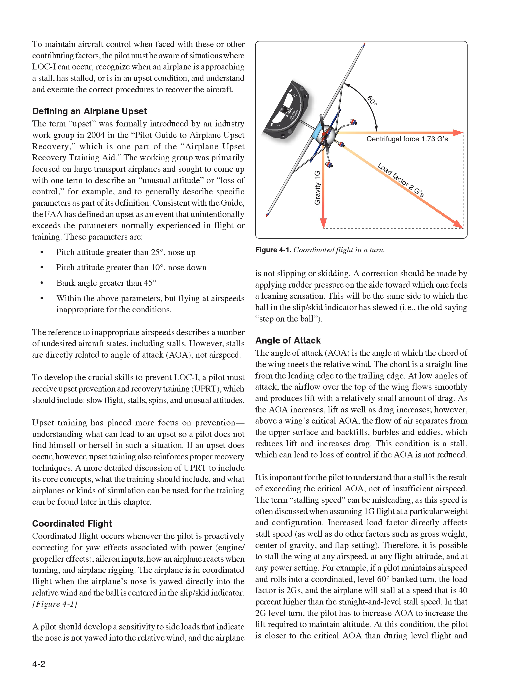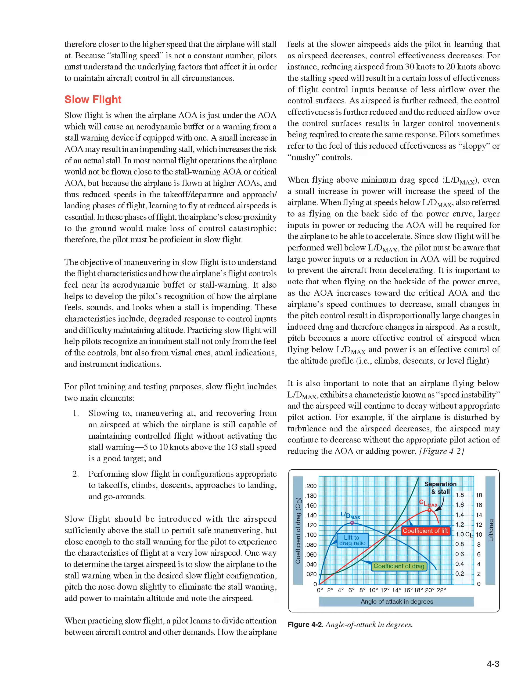For example, if a pilot maintains airspeed and rolls into a coordinated, level 60-degree bank turn, the load factor is 2Gs, and the airplane will stall at a speed higher than the straight-and-level stall speed. In that 2G level turn, the pilot has to increase AOA to increase the lift required to maintain altitude. The pilot is therefore closer to the critical AOA than during level flight, and closer to the higher speed at which the airplane will stall. Because stalling speed is not a constant number, pilots must understand the underlying factors that affect it in order to maintain aircraft control in all circumstances.